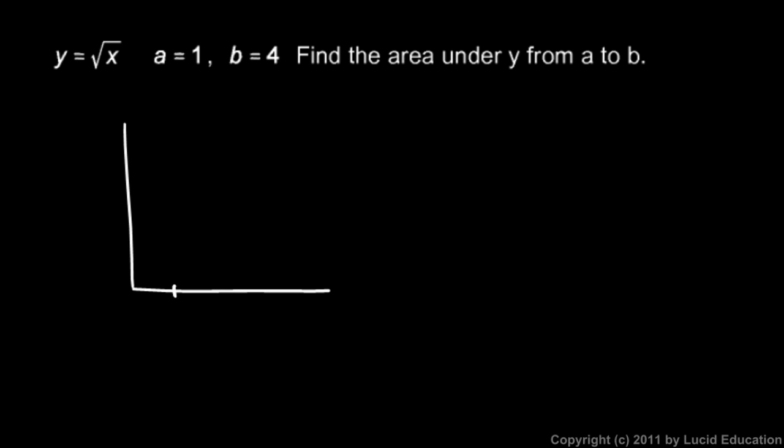So let's mark off the graph here, mark some points on our graph. Okay, we know what the square root curve looks like. It goes through 0, 0, 1, 1, and 4, 2.